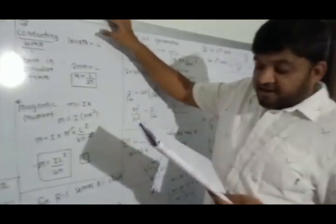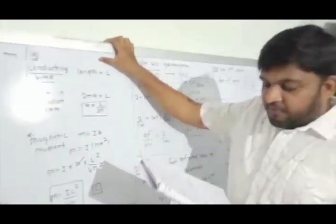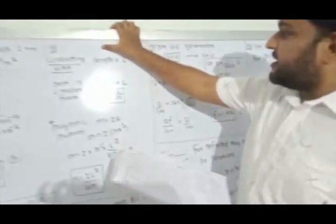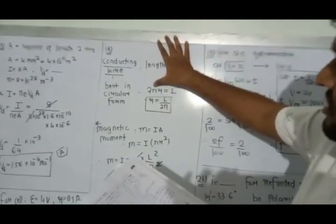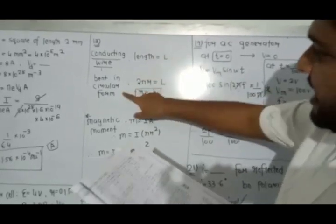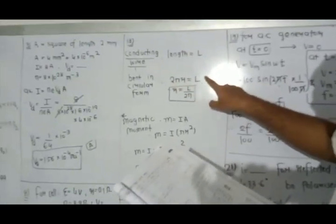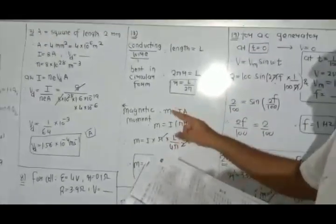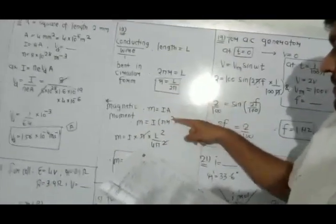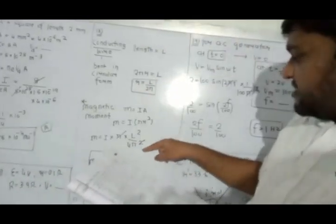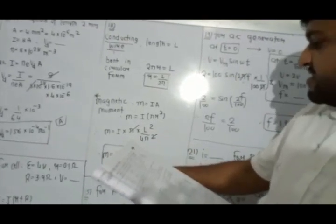Question number 13. A current flows in a conducting wire of length l. If we bend it into a circular form, the radius R = l/(2π). The magnetic dipole moment M = I·πR² = I·π·(l/2π)² = I·l²/(4π). Option C.